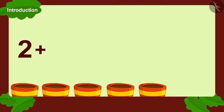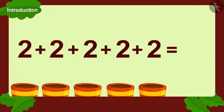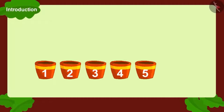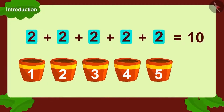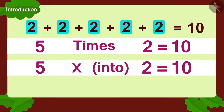Add two to two, again add two, again add two, and finally one more. How many seeds do we get? Ten seeds. Each pot has two seeds and there are five such pots. We can write it as five times two, or we can also write it as five multiplied with two.